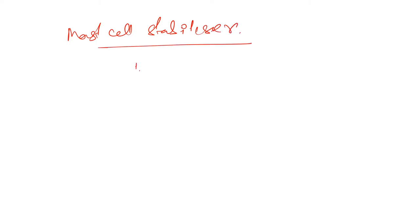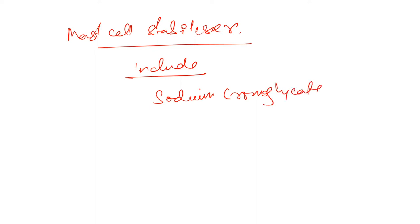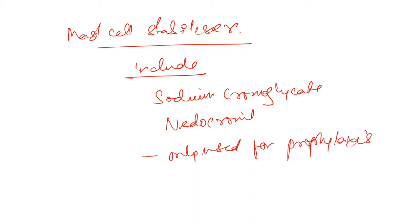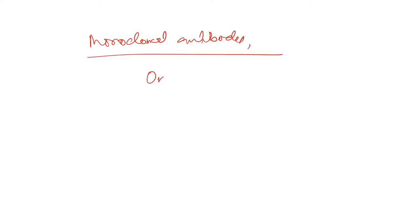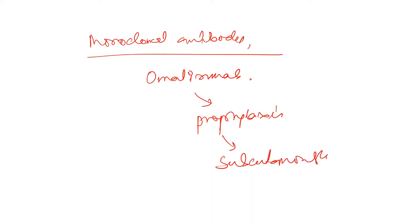Next are mast cell stabilizers. These include sodium cromoglycate and nedocromil. They are only used for prophylaxis. There is also a monoclonal antibody used in bronchial asthma — omalizumab, a monoclonal antibody against IgE, used for prophylaxis and given subcutaneously.